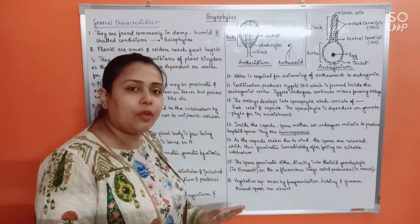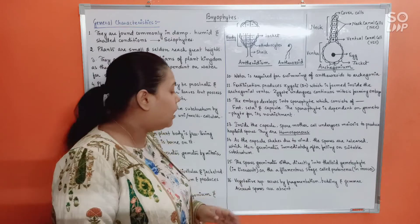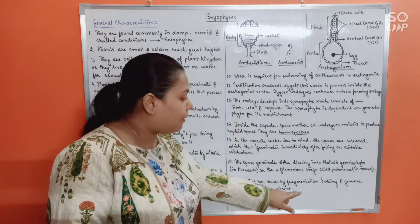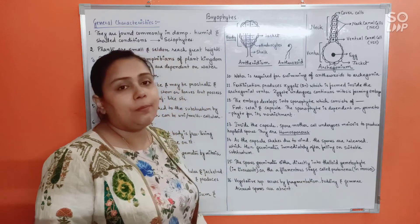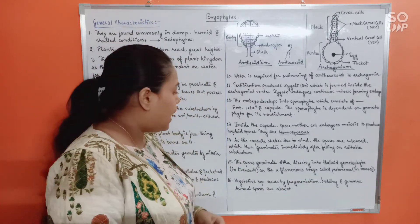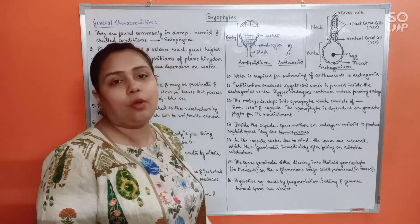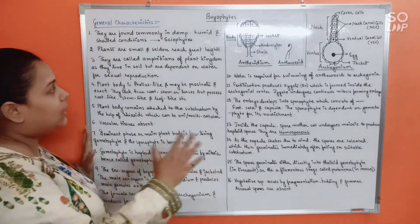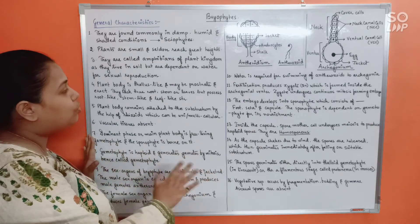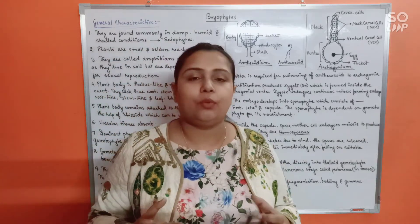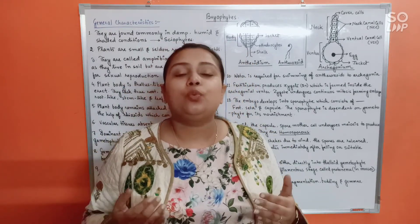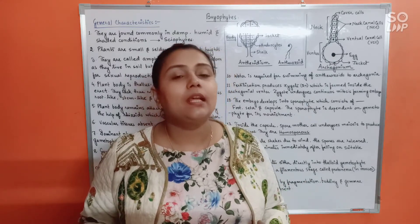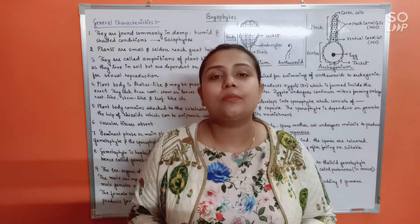Besides sexual reproduction, vegetative reproduction is also found in bryophytes. It occurs by fragmentation, budding or gemma formation — gemma formation is a very important topic that will be discussed in detail under liverworts. Asexual spore or mitospore formation is absent in bryophytes.